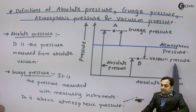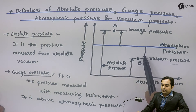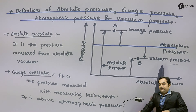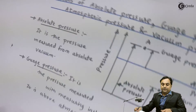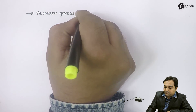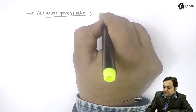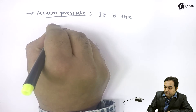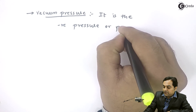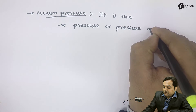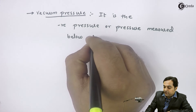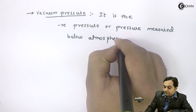Next we have vacuum pressure. Vacuum pressure is the pressure that goes below the atmospheric pressure blue line, so it is called vacuum. Vacuum pressure is less than atmospheric pressure. Vacuum pressure is the negative pressure, or pressure measured below atmospheric pressure.